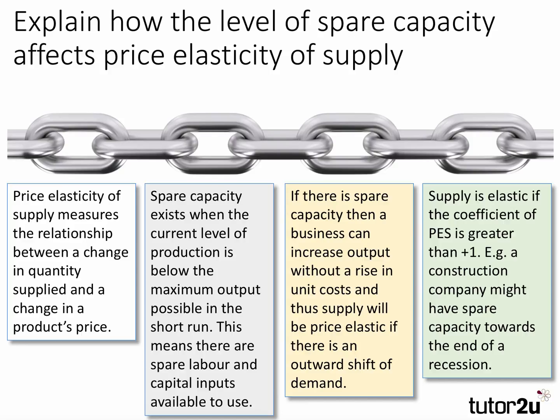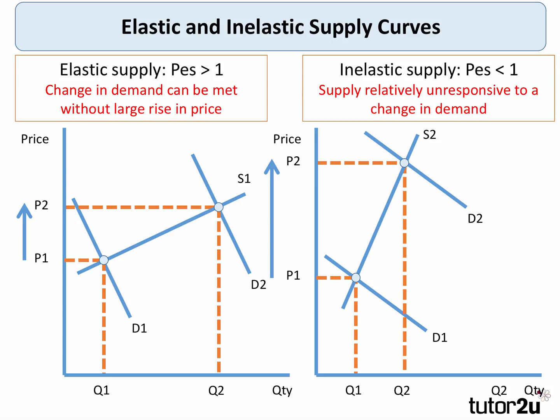You would support this answer with diagrams. On the right-hand side we have an inelastic supply curve — supply fairly unresponsive to a change in demand — which occurs when there is a relatively small level of spare capacity. On the left-hand side, the supply curve is drawn as more elastic: if the demand curve shifts out from D1 to D2, businesses are able to meet that increase in demand without a significant rise in price.